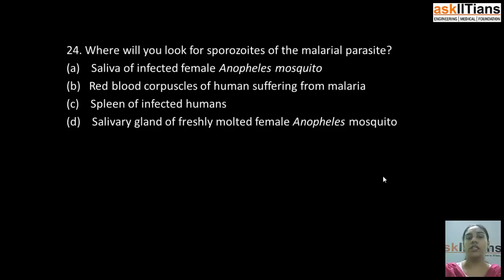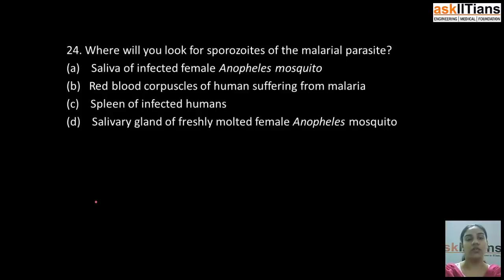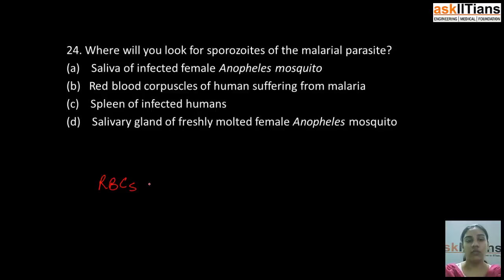The next question is: where will you look for sporozoites of the malarial parasite? A) Saliva of infected female Anopheles mosquito, B) red blood corpuscles of humans suffering from malaria, C) spleen of infected humans, D) salivary gland of freshly molted female Anopheles mosquito. The correct answer is A: saliva of infected female Anopheles mosquito. In the RBCs of an infected human being suffering from malaria, trophozoites are present.